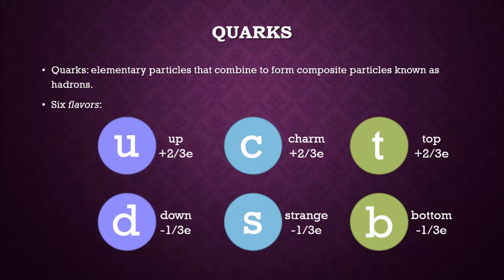You can see that the up, charm, and top quarks all have a charge of positive two-thirds of an elementary charge. And the down, strange, and bottom quarks all have a charge of negative one-third elementary charge. Just because some of these particles have the same charge doesn't mean that they're the same.